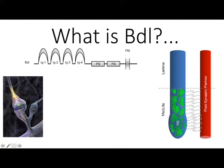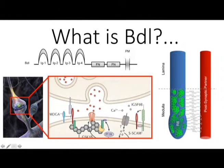So what is borderless? Essentially, it is an adhesion molecule. And what that means is, like its name says, it helps things stick together. At this synapse, you have neurotransmitter release, but these neurons need to know that they need to stick together. It's kind of like Velcro — if there's no Velcro there, they don't stick together, and they won't be in close enough proximity for this signal to be sent across.